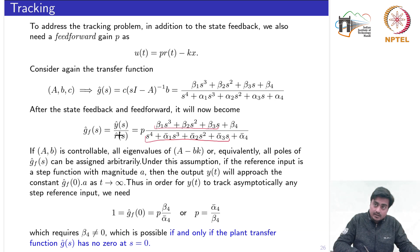On the right hand side we would have p times the ratio of beta 4 by alpha 4 bar.